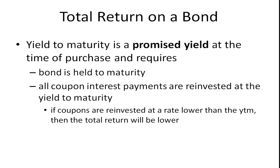Yield to maturity is a promised yield at the time of purchase, and it requires two things: that the bond is held to maturity, and that all coupon interest payments are reinvested at the yield to maturity. If the coupons are reinvested at a rate lower than the yield to maturity, then the total return will be lower.